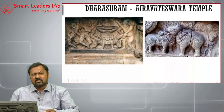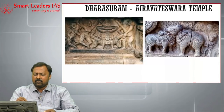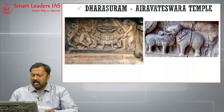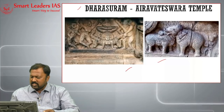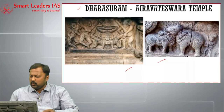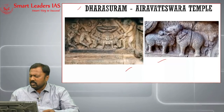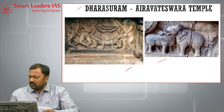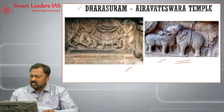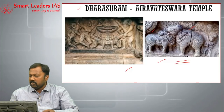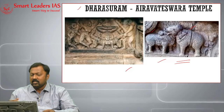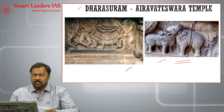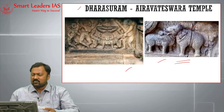Nearby is another Chola-associated temple located at Dharasuram — the Airavatesvara Temple. This temple is known for numerous unique images: if you hide one side, it represents one figure; if you hide the other side, it represents another figure. For example, hiding one half reveals an elephant, while hiding the other half reveals a bull. This is the uniqueness of the images at Dharasuram.